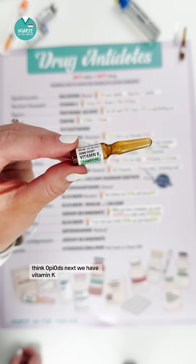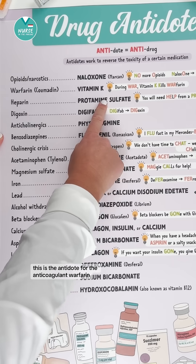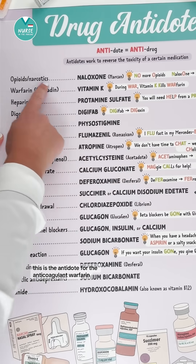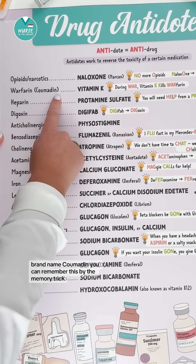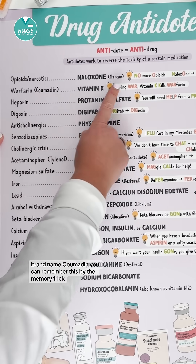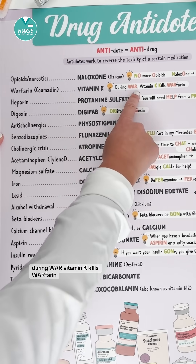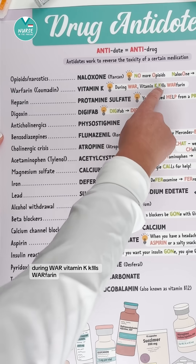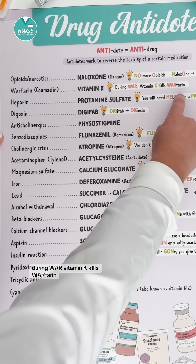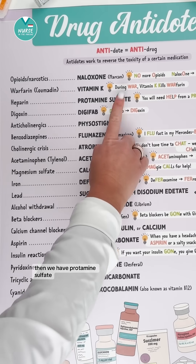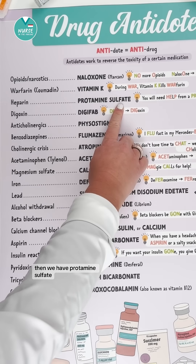Next we have vitamin K. This is the antidote for the anticoagulant warfarin, brand name Coumadin. You can remember this by the memory trick: 'during war, vitamin K kills warfarin.'